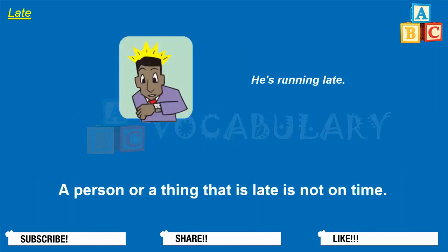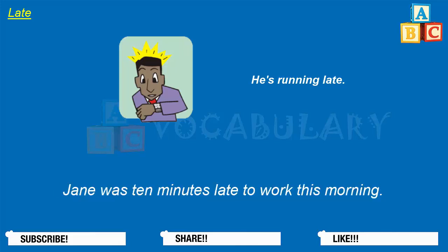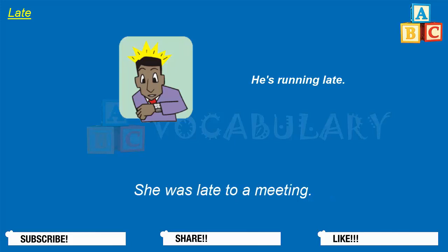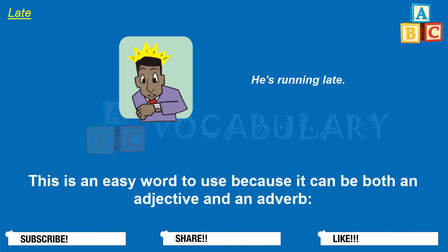Late. A person or a thing that is late is not on time. Jane was ten minutes late to work this morning. She woke up late. She went to sleep late last night. She was late to a meeting. This is an easy word to use because it can be both an adjective and an adverb.